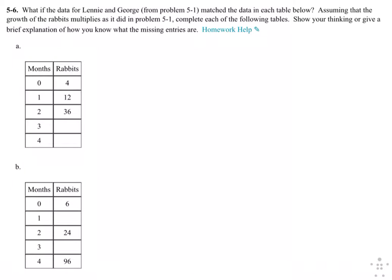Okay, for number 5-6, they want us to continue filling in these tables. So for part A, I can see that the multiplier here is 3. They're multiplying by 3, and then they're multiplying by 3 again.